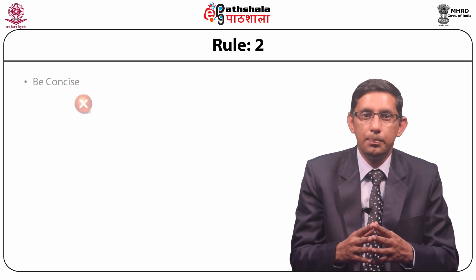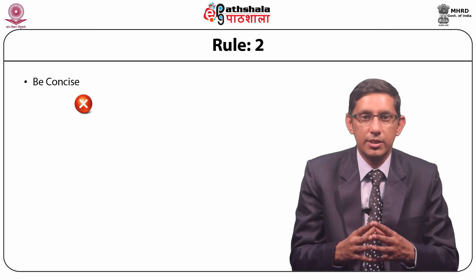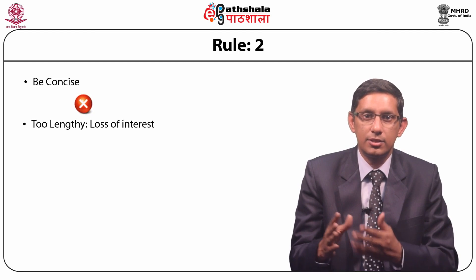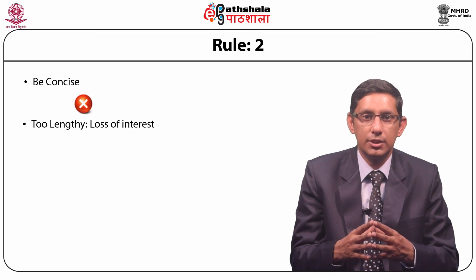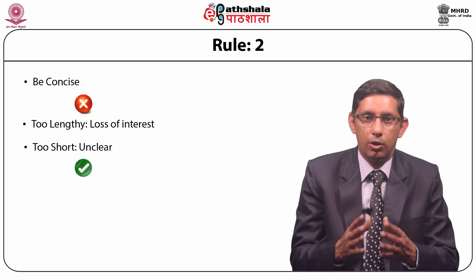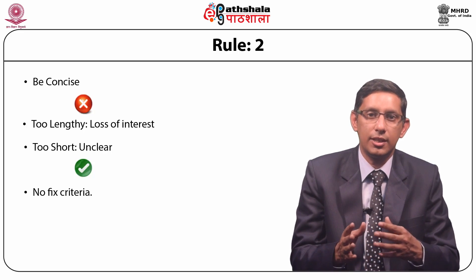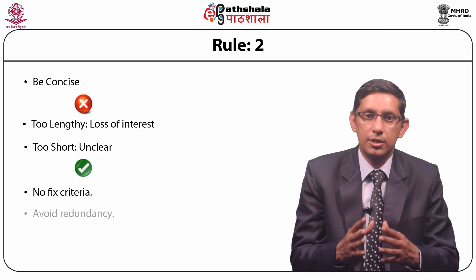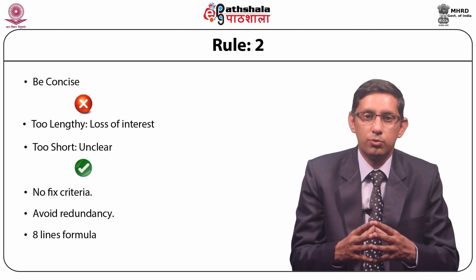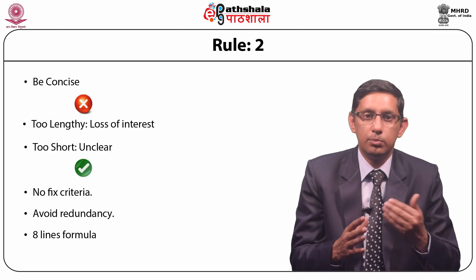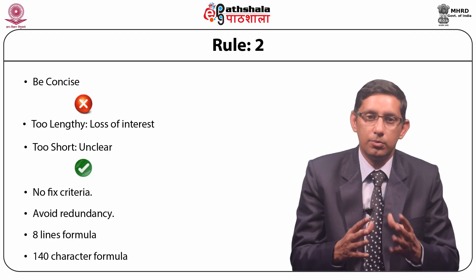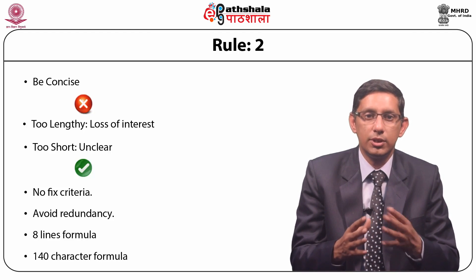Rule 2: Be concise in your message. Your message should not be too lengthy as it creates loss of interest among receivers. Also, it should not be too short so that the message is unclear. Although there is no fixed criteria about the length, try to avoid redundancy. You can use the 8-line formula — do not write more than 8 lines in an email — and the 140-character formula — do not write more than 140 characters.